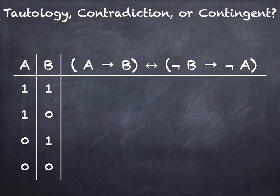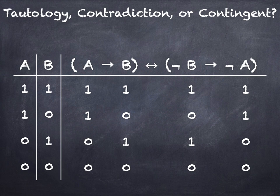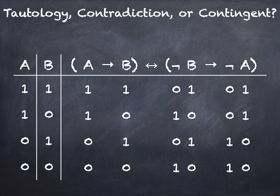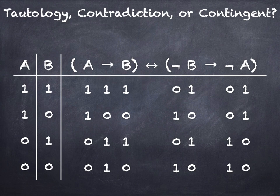Okay, let's see how you did. First we're going to copy over the single atomic sentences A and B. Then the negation of B and negation of A are simple enough — you can check that that's right if you need to by pausing. We can simply copy over the characteristic truth table for 'if A then B' here.